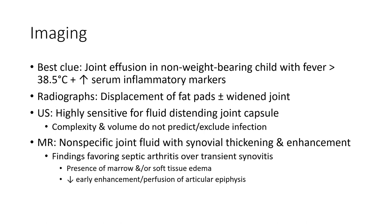Radiograph: displacement of fat pad, plus or minus widened joint. Ultrasound is highly sensitive for detecting a distending joint capsule. Complexity and volume do not predict or exclude infection. MRI shows a non-specific joint with synovial thickening and enhancement. Findings favoring septic arthritis over transient synovitis include presence of marrow edema and osteomyelitis, increased early enhancement, and perfusion of articular epiphyses.